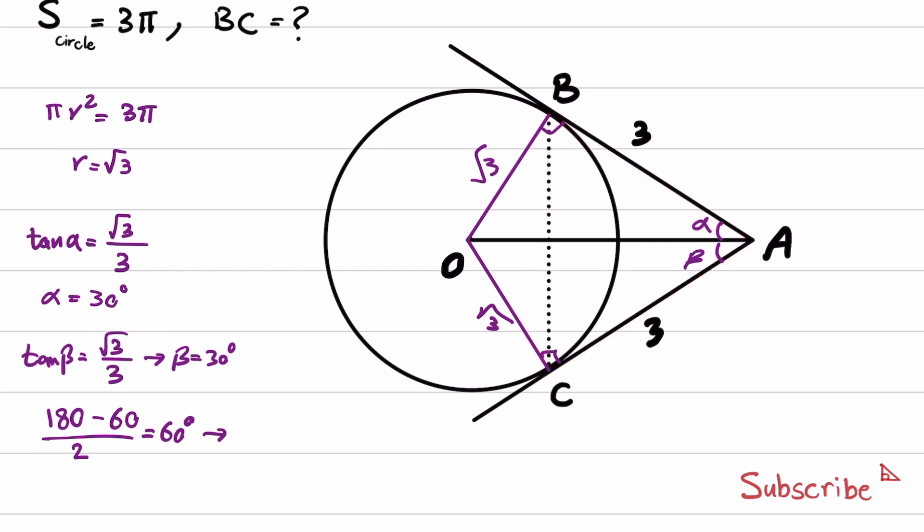BC is equal to 3. This was a simple solution for this question. There are other ways to solve it — if you have an alternative solution, please let me know in the comment section below.